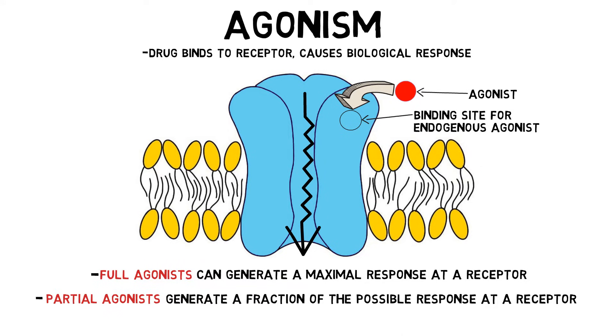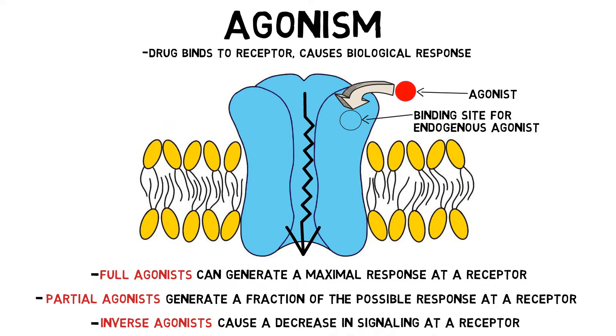In some cases, an agonist may bind to a receptor and cause a decrease in signaling at that receptor. These substances are called inverse agonists, and they can produce effects that are opposite to those of an agonist.